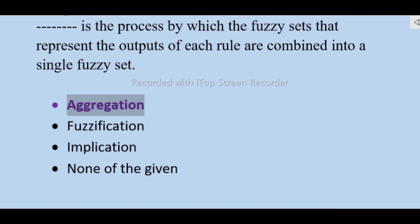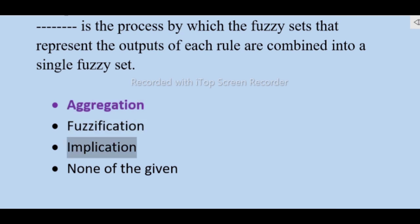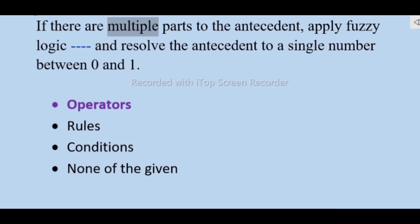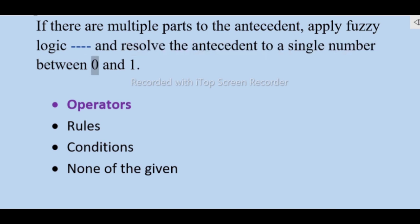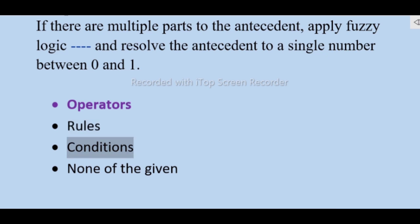The process of combining fuzzy rule outputs into a single fuzzy set is called aggregation — not fuzzification, none of the given. If there are multiple parts to the antecedent, apply fuzzy logic and resolve the antecedent to a single number between 0 and 1 using operators — not rules, conditions, or none of the given.